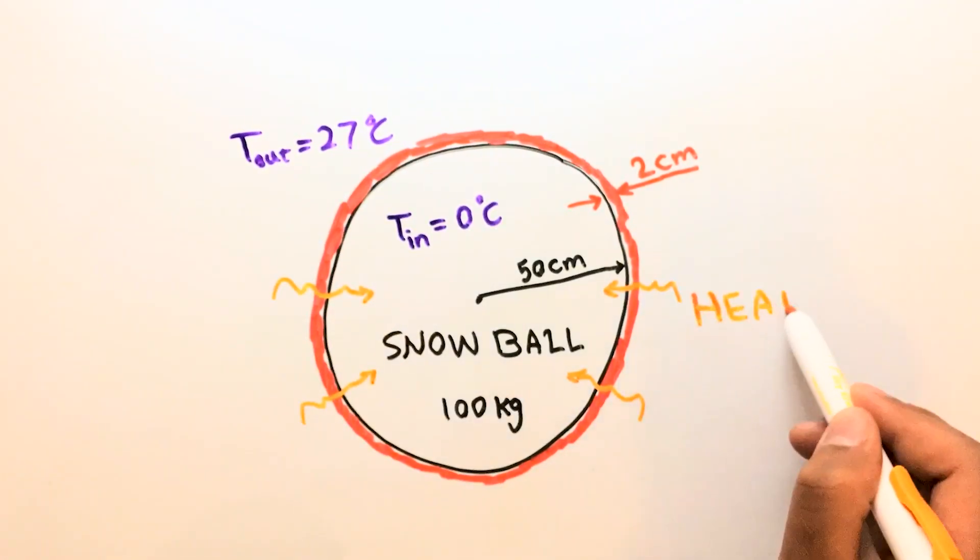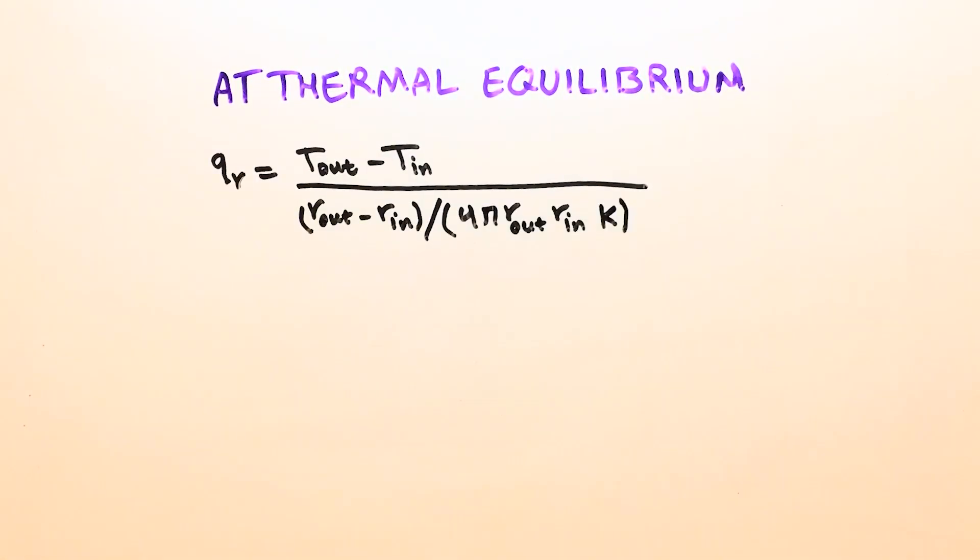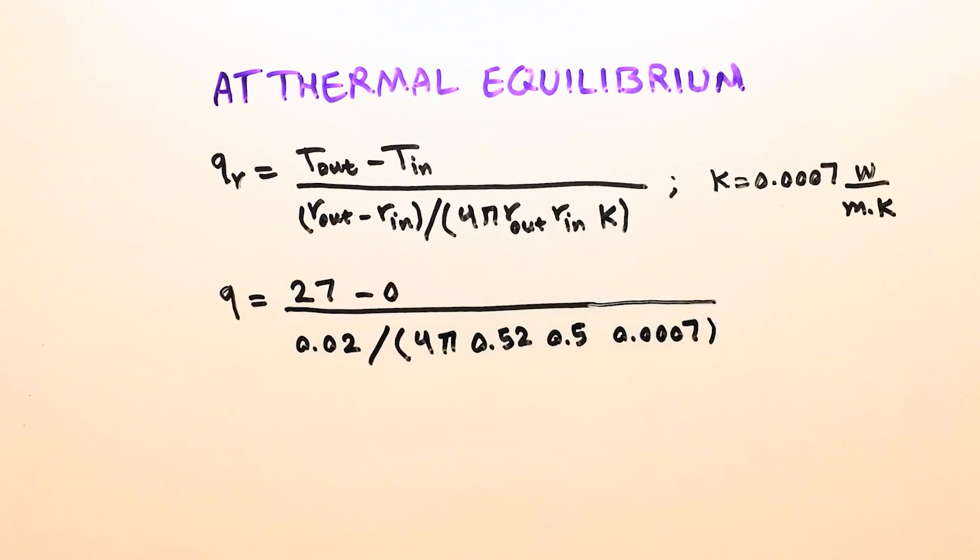So the heat flow through the insulation layer at thermal equilibrium can be estimated by this equation. By knowing a typical thermal conductivity and plugging it in the heat flow equation, the heat flow through the insulation covering is estimated to be about 3 watts.